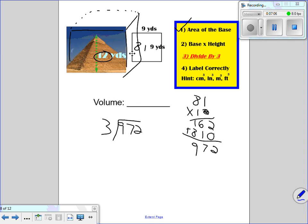How many times can 3 go into 9? 3 goes in there three times. Subtract, get a 0, bring down the 7. 3 times 2 is 6. Subtract, bring down the 2. 3 goes in a 12, 4 times 12. Subtract, get a 0. 324 yards cubed.